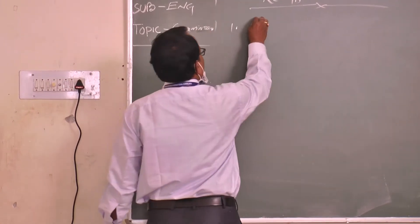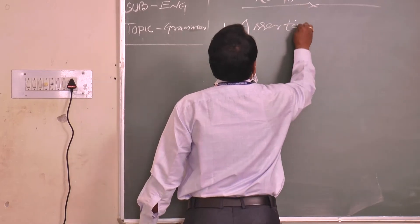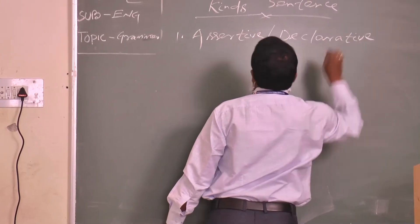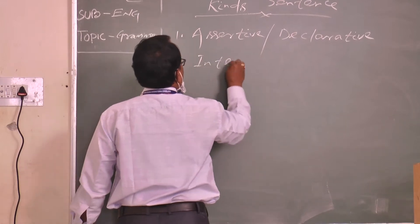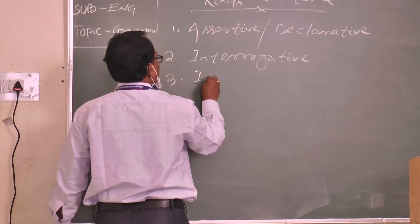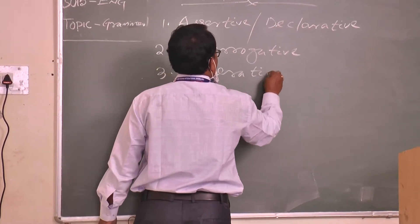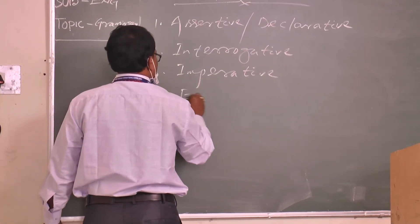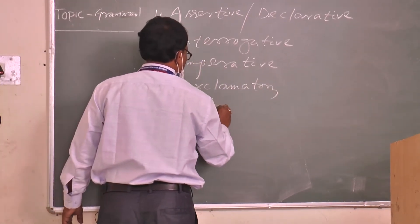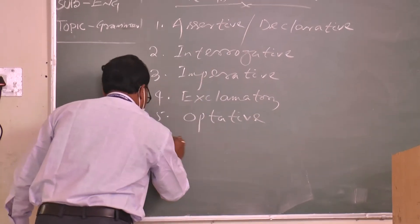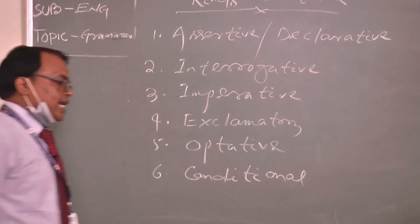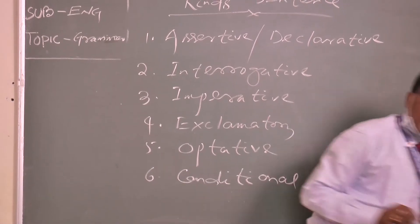Number one is assertive — you may also call it declarative. Number two is interrogative. Number three is imperative. Number four is exclamatory. Number five is optative. Number six is conditional. Generally, there are six types of sentences, but particularly we study only four from the very beginning.